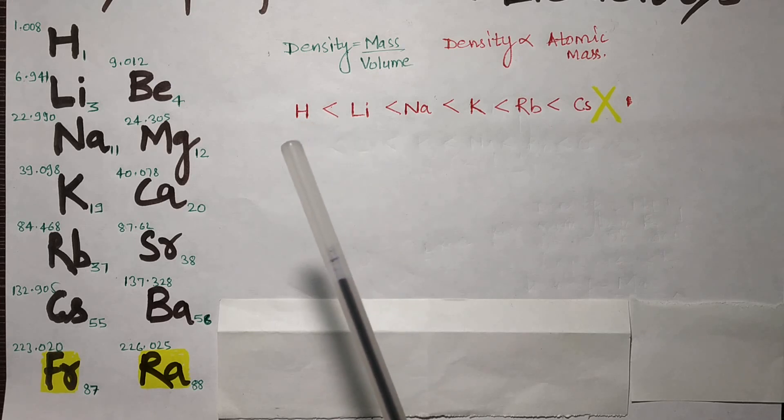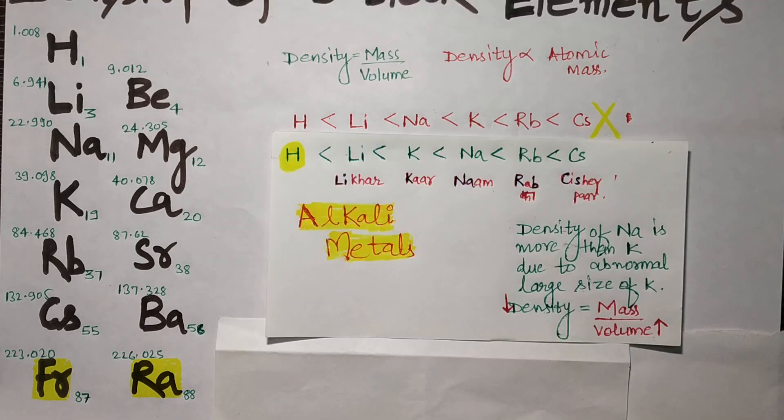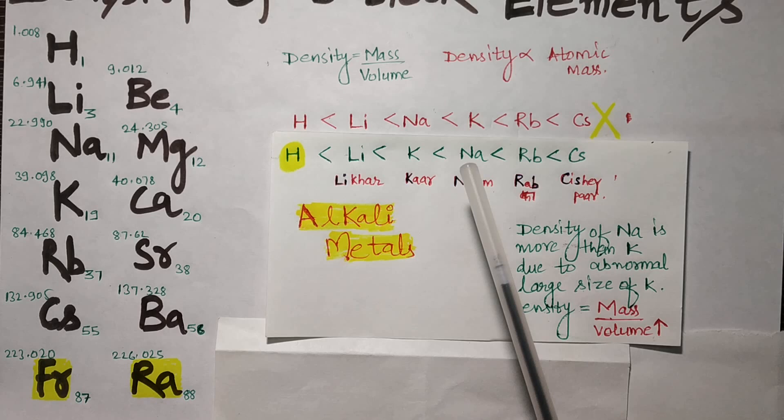Is it possible that there is no exception in organic chemistry? Not really. The exception exists: sodium's density compared to potassium is more than potassium due to the abnormal large size of potassium.